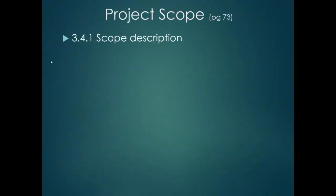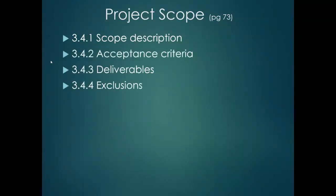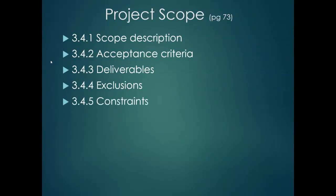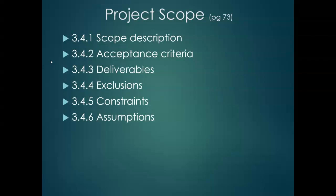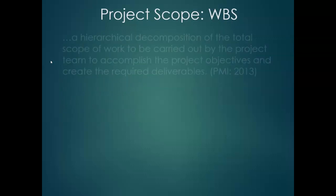What's included in the scope — this is on page 73 — includes the scope description, acceptance criteria, deliverables, exclusions, constraints, and assumptions. I spoke in more detail in the previous recording about the difference between constraints, assumptions, and risks, so go get some clarity on that from that recording.